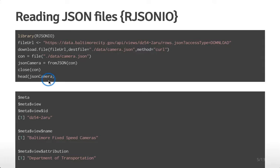JSON files are structured a little differently than a data table — they have a structure that looks similar to a list in R. The JSON functions read the file and create an R structure that lets you access the data directly. We probably won't do a lot with JSON files in this class, but if you have questions about rjson.io or rjson, there are many good web resources available.